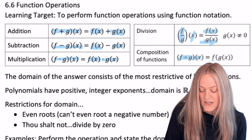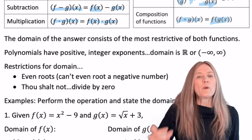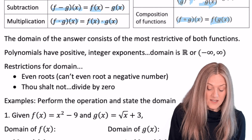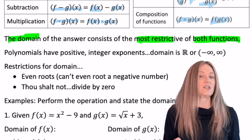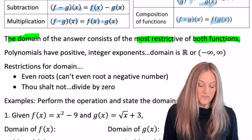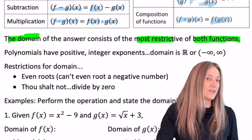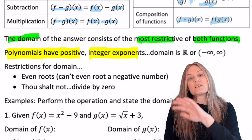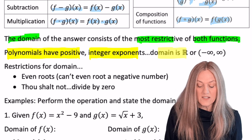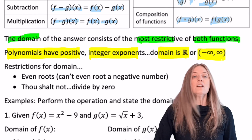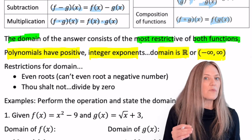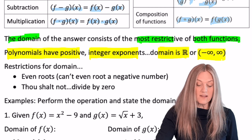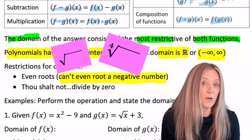We prefer to write composite functions in the form f of g of x, which you'll see later in the lesson. When performing operations on functions, it's important to consider the domain — it is the most restrictive of both functions, or all functions if there are more than two. If it happens to be a polynomial — polynomials have positive integer exponents — their graphs are always smooth, continuous curves, so the domain is all reals.